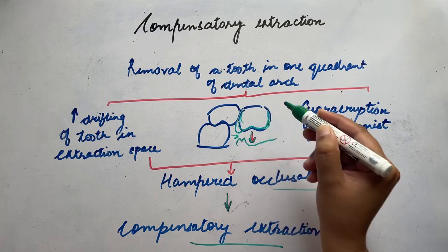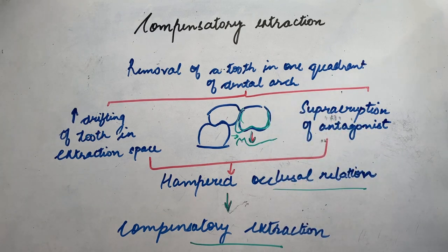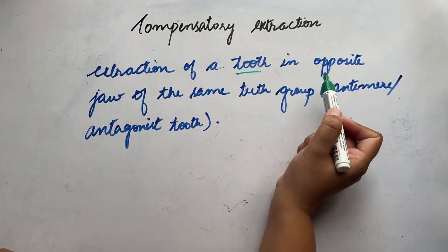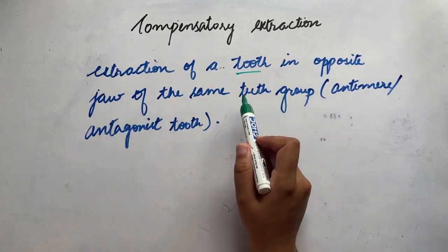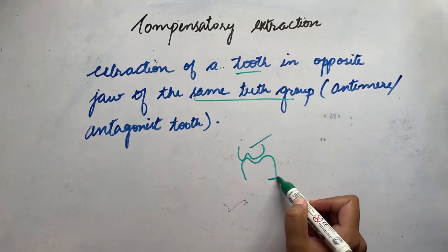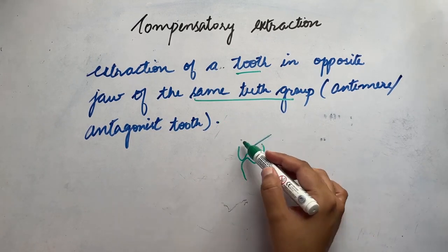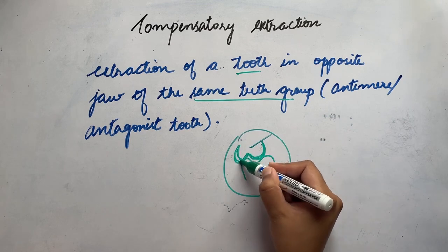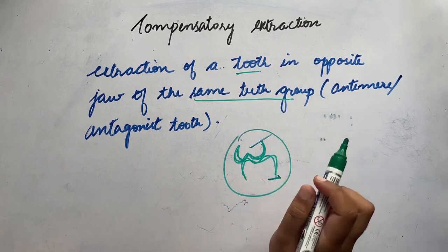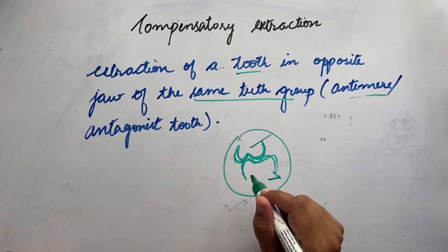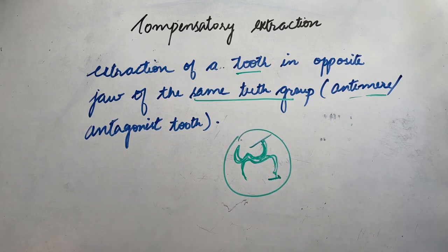In compensatory extraction, we have to remove the upper third molar as well to have a better occlusal relation. By definition, compensatory extraction refers to extraction of a tooth in the opposite jaw of the same teeth group. For example, if we are extracting the maxillary third molar, the compensatory extraction will be of the mandibular third molar — the antimere. The mandibular third molar is the antimere of the maxillary third molar, and vice versa.